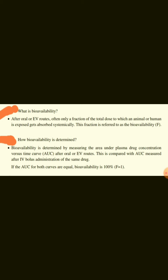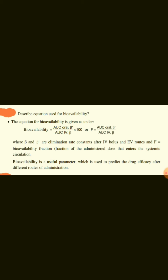How is bioavailability determined? Bioavailability is determined by measuring the area under the plasma drug concentration vs. time curve after oral or extravascular routes. This is compared with the AUC measured after IV bolus administration of the same drug. If the AUC for both curves are equal, bioavailability is 100%, meaning F equals 1. The equation is: F equals (AUC oral × elimination constant oral) divided by (AUC IV × elimination constant IV), multiplied by 100.